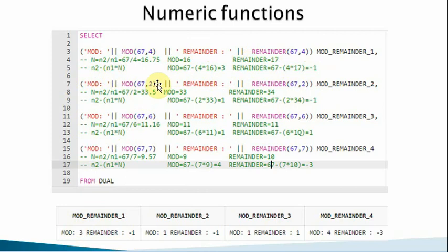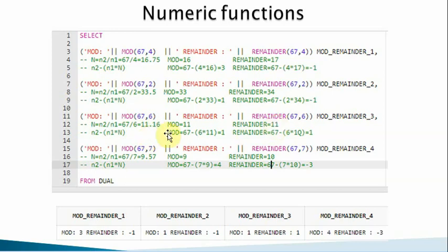For 16.16 divided by 2, n is 33.5. Applying FLOOR gives 33 for MOD, and ROUND gives 34 for REMAINDER — so the results differ (1 versus minus 1). For 67 divided by 6 which is 11.16, both FLOOR and ROUND give 11 since 0.16 is less than 0.5, so MOD and REMAINDER return the same value. For 67 divided by 7 which is 9.57, MOD uses FLOOR giving 9, while REMAINDER uses ROUND giving 10, showing the difference again.